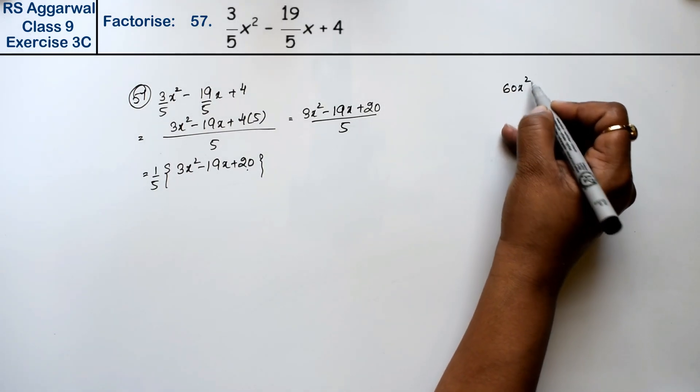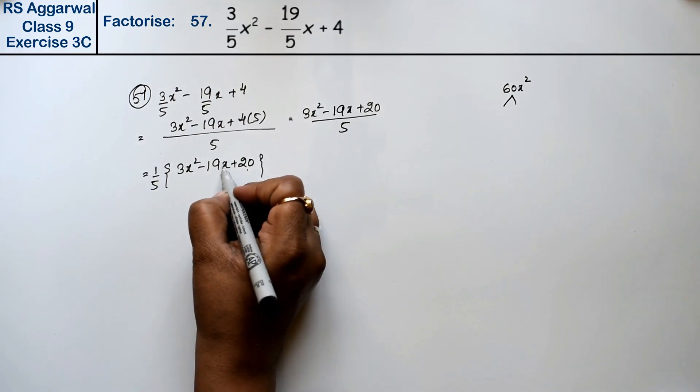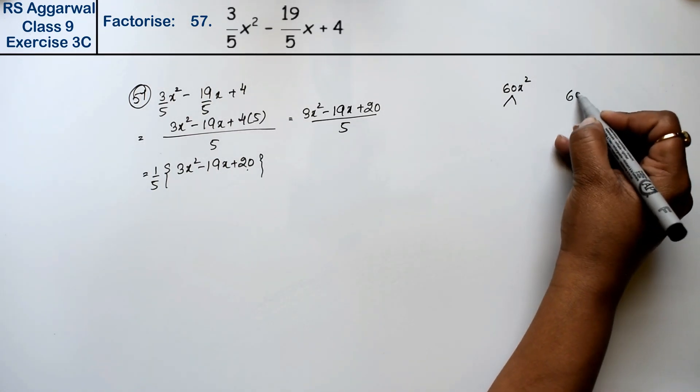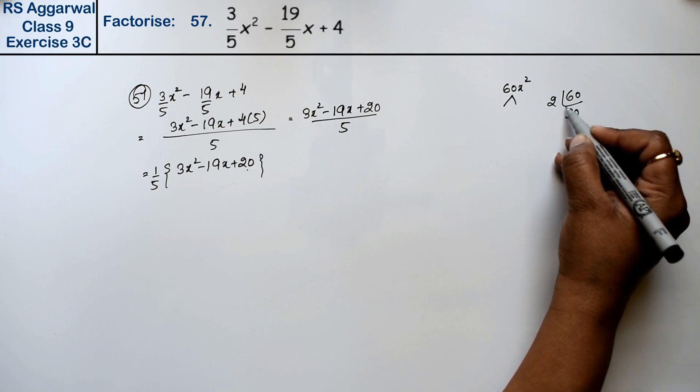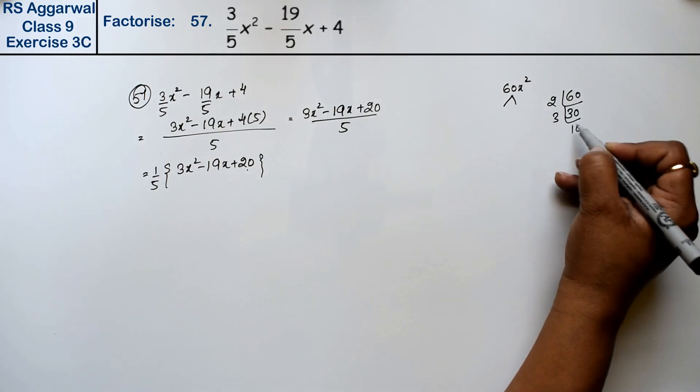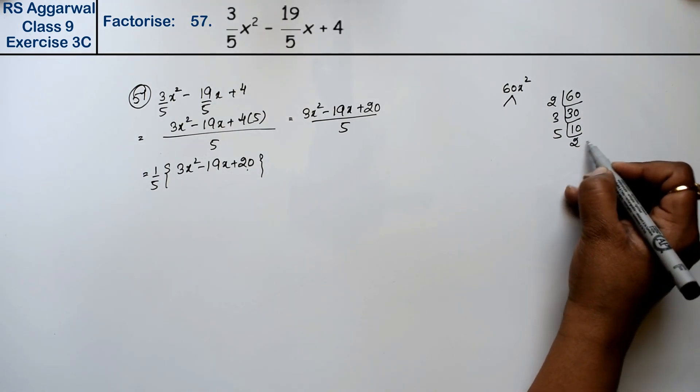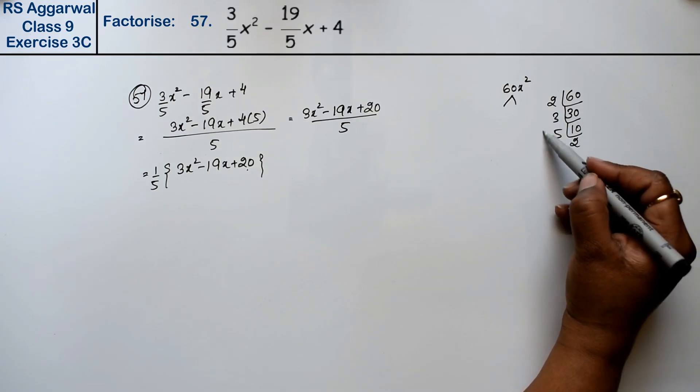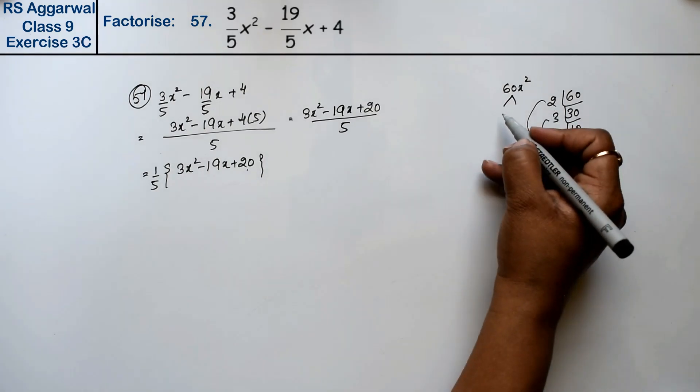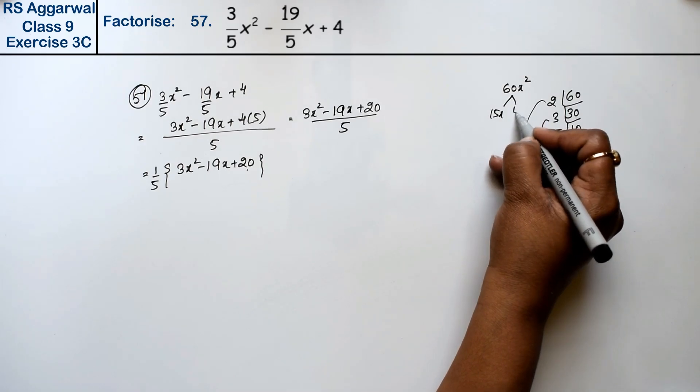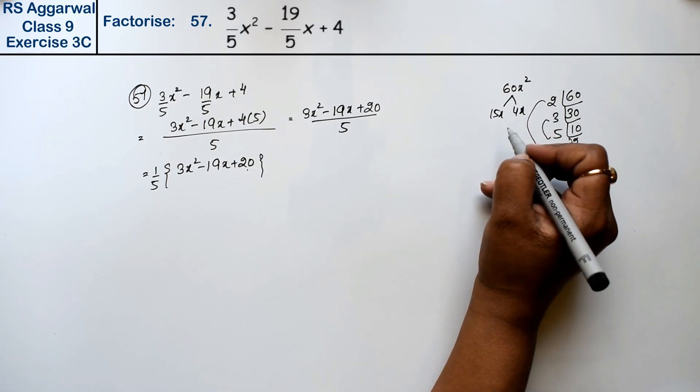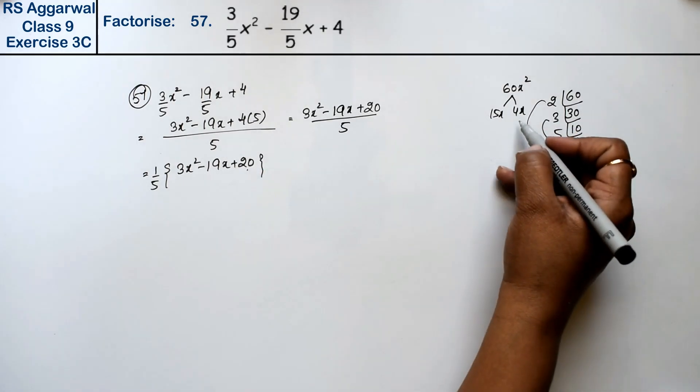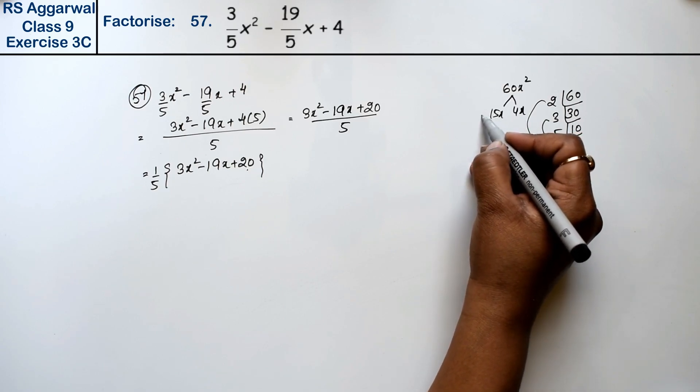We need to factor 3x². The coefficient is 60. The factors that give minus 19 are: 60 factors come out to 3×6=18, 3×10=30, 5×2=10. Now see, 15 and 4. So 15x and 4x add to 19, with appropriate signs: minus, plus, and minus.